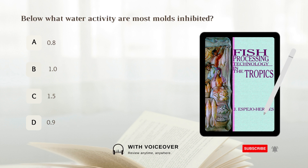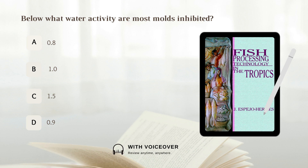Below what water activity are most molds inhibited? A. 0.8. B. 1. C. 1.5. D. 0.9. Answer: A. 0.8.